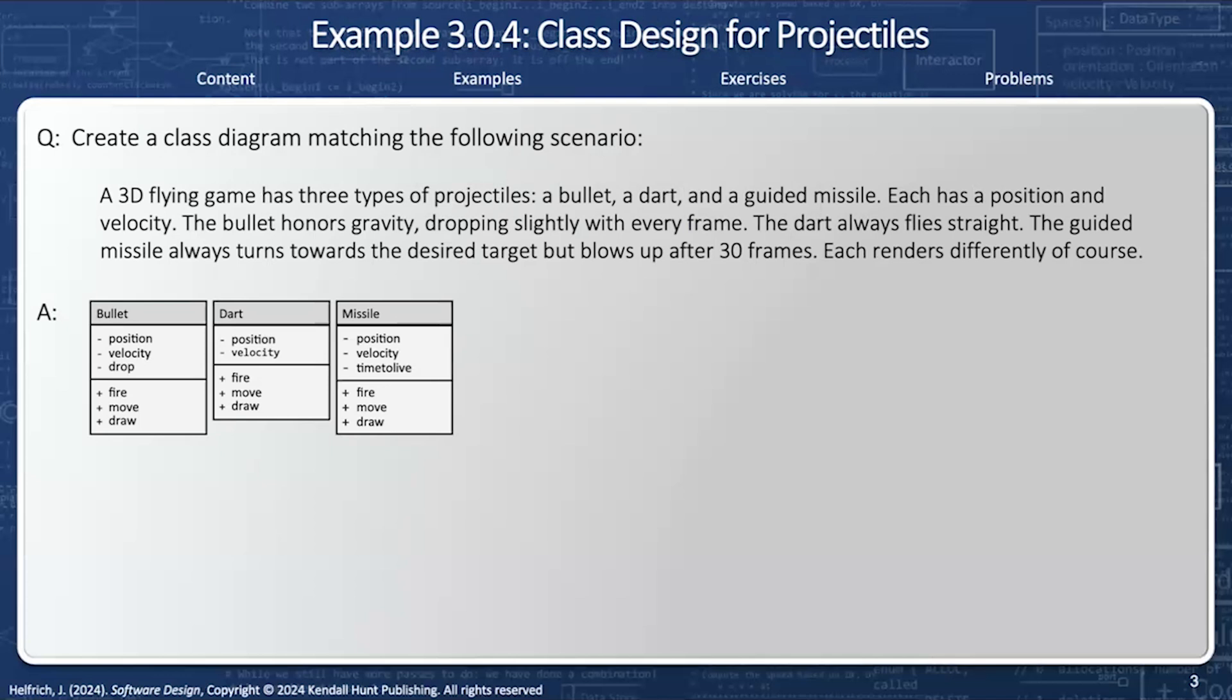Now, this is a rather naive implementation. I've noticed that each one of these three is related. And how are they related? Well, they're types of projectiles. They have the same position and velocity. They have the same fire and move, and they all have a unique draw.